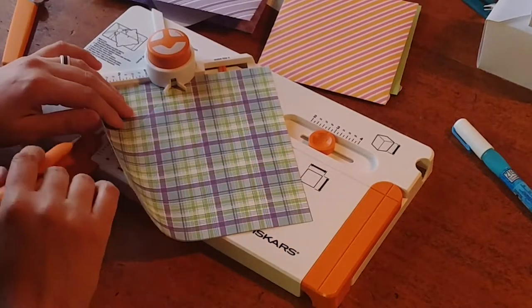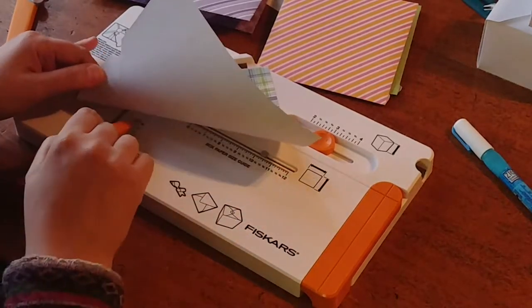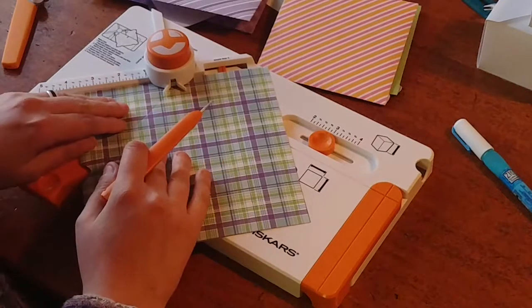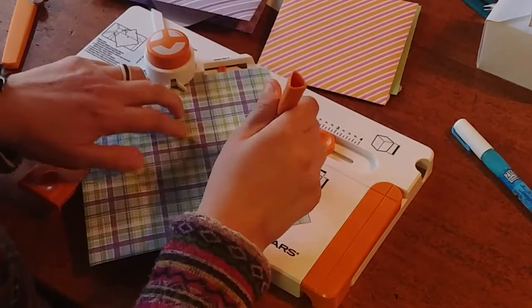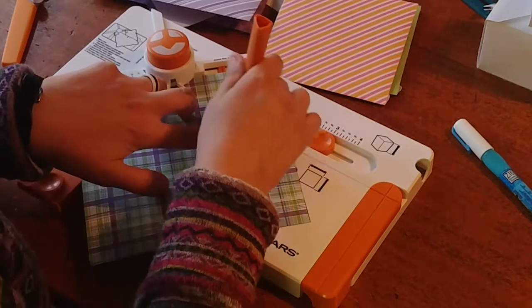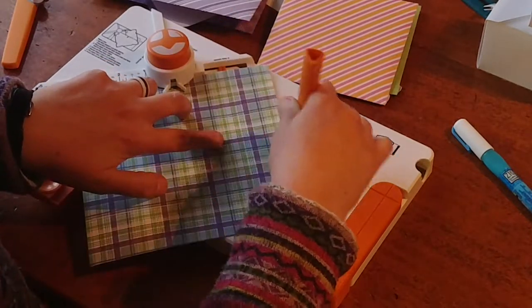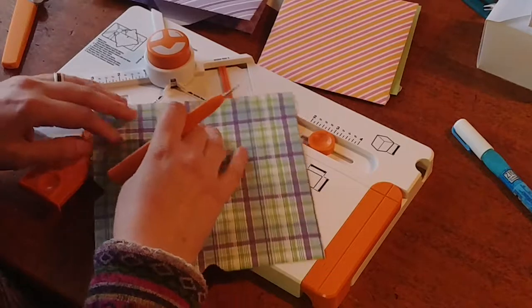Now, what you're going to need to do is make sure this line lines up with this scoring area. And on a square envelope, it pretty much does by itself. On a rectangular envelope, you have to shift it a little bit.